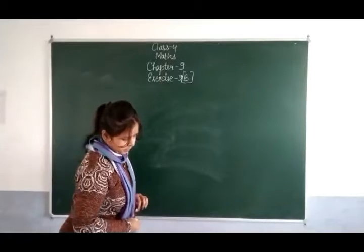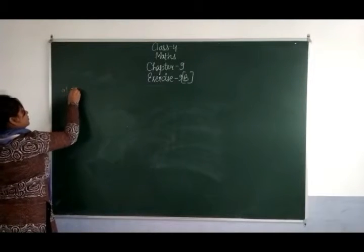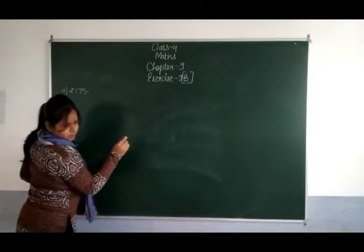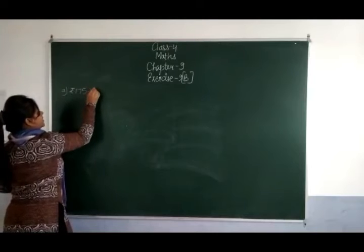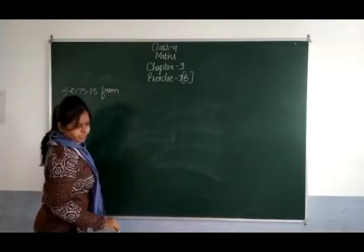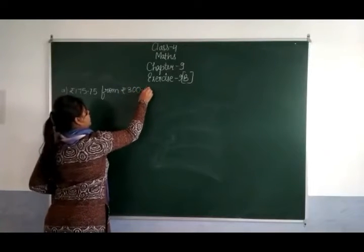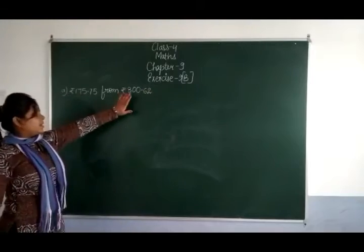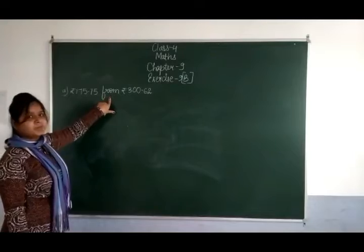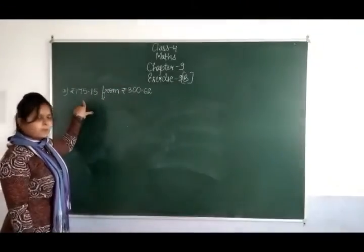जैसे बोला है — 175 रूपीज 75 पैसे, from 300 रूपीज and 62 पैसे। इस amount में से इस वाले amount को subtract करना है। 'from' मतलब 'से', तो इस वाले amount में से इस वाले amount को हम subtract करेंगे।